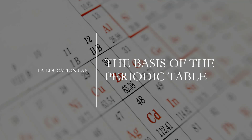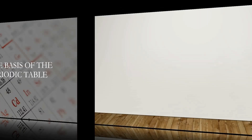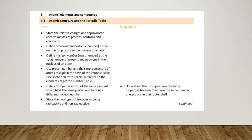So before we move on and get started with the topic, let's have a look at the syllabus first. According to our syllabus, we have covered the first three main points, and in today's video we will be dealing with the fourth important point: using proton number and the simple structure of atoms to explain the basis of the periodic table.